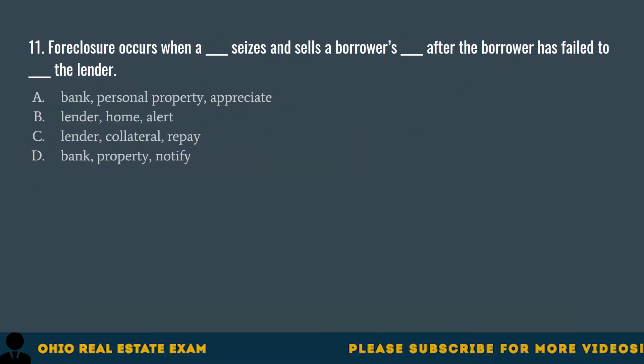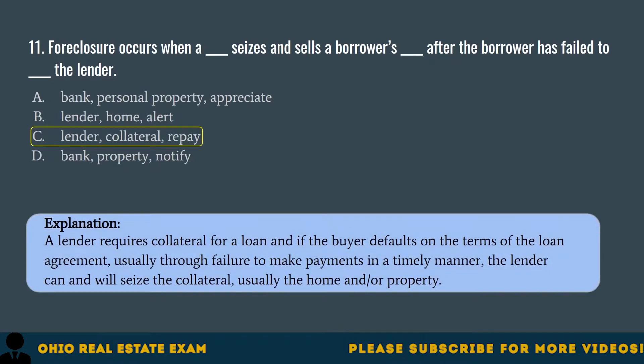Question 11. Foreclosure occurs when a blank seizes and sells a borrower's blank after the borrower has failed to blank the lender. A. Bank, personal property, appreciate. B. Lender, home, alert. C. Lender, collateral, repay. D. Bank, property, notify. The correct answer is C. Lender, collateral, repay. A lender requires collateral for a loan, and if the buyer defaults on the terms of the loan agreement — usually through failure to make payments in a timely manner — the lender can and will seize the collateral, usually the home and/or property.